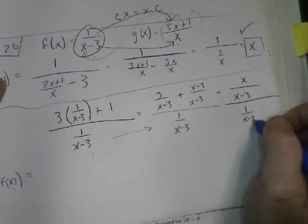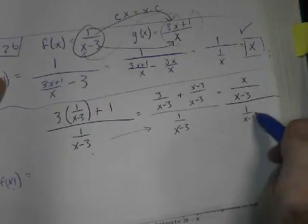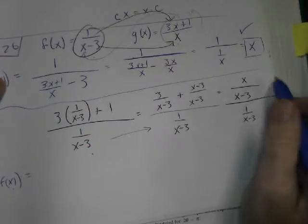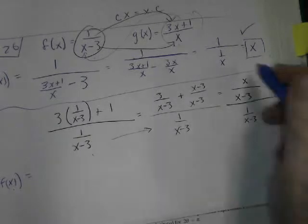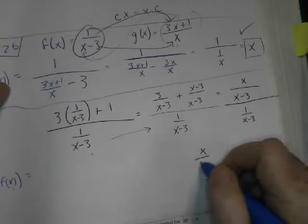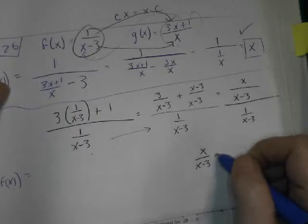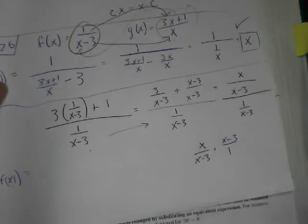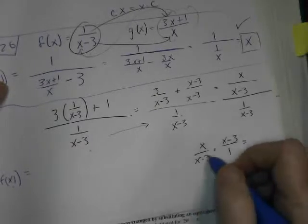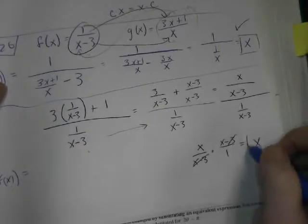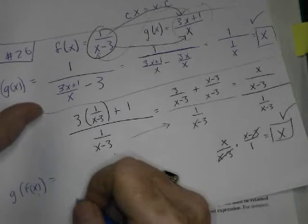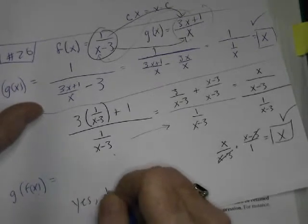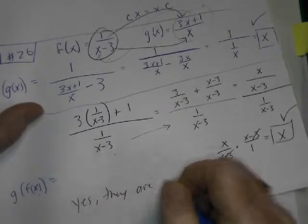Well, you can imagine if I take that and flip it up here, the x minus 3 is going to go away. And I can even show it. I'll show it out the long way. x over x minus 3 times this reciprocal, x minus 3 over 1. Well, look at that. So it did turn out. So we're going to say, yes, they are inverses. Or they are inverse functions.